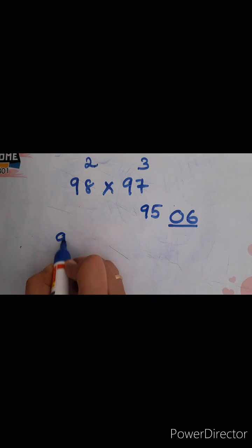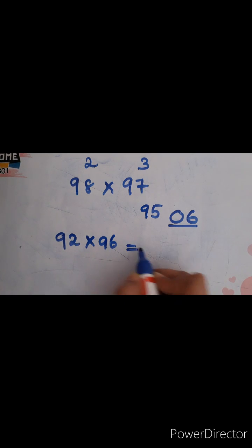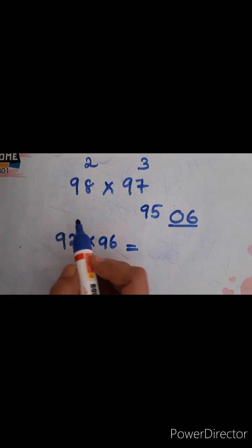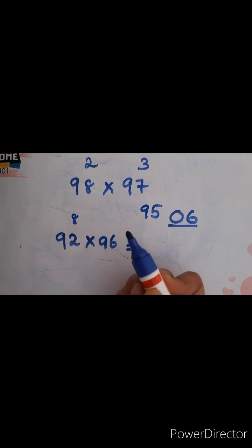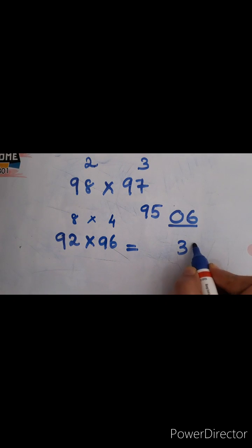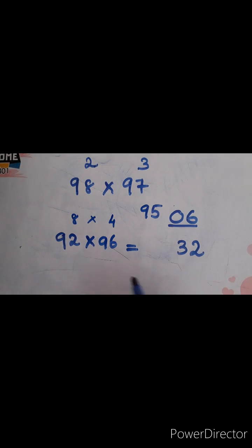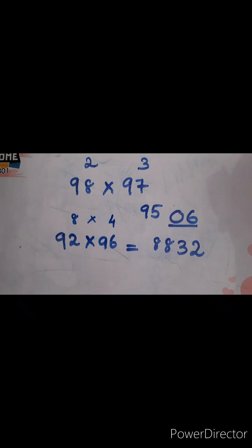One more example: 92 into 96. Consider 100 — 92 plus 8 gives 100, and 96 plus 4 gives 100. 8 fours are 32 — write 32. No need for a leading zero since it is already two digits. Subtract: 96 minus 8 or 92 minus 4 gives 88. So my answer is 8832.